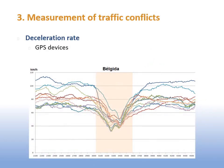The last traffic conflict technique we are going to show is the deceleration rate. A sudden deceleration is normally connected to a serious conflict. Although this is a good indicator of the severity of a traffic conflict, it is difficult to accurately measure it, so its use is not widely spread.